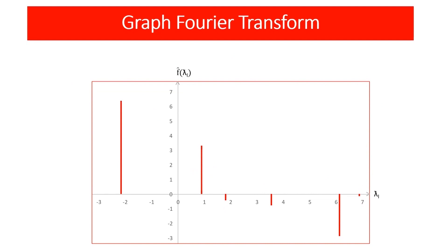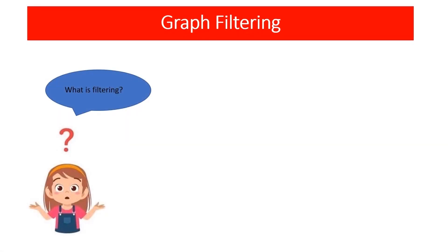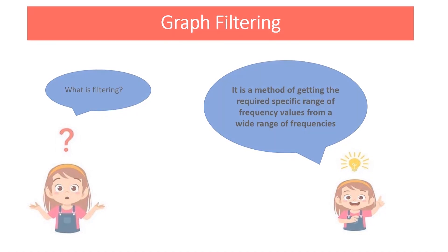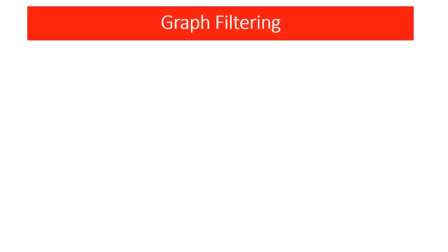So far we have got a good foundation about Fourier. So now, we can step into the graph filtering subject. Firstly what is filtering? It is a method of getting the required specific range of frequency values from a wide range of frequencies. To understand this easily, we shall go through an example.